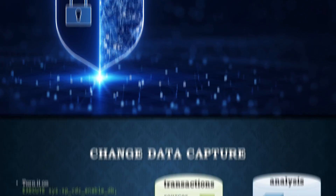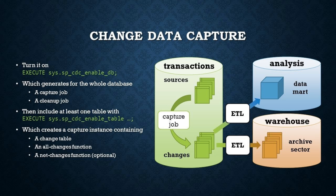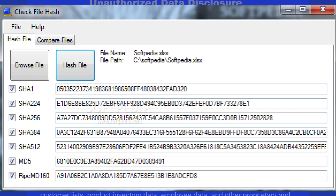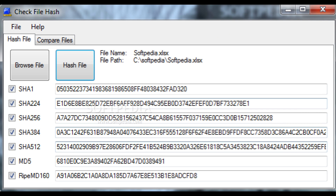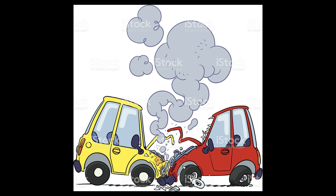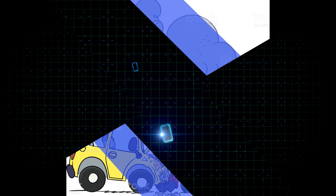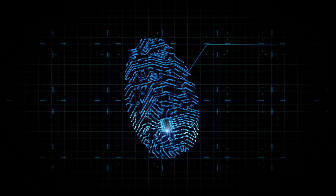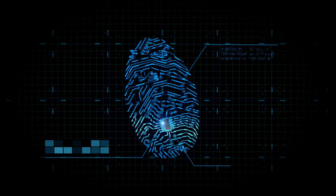Even a minor change in the data set will yield a completely different hash value. As such, any unauthorized data manipulation will be found and identified. Also, in a hash algorithm, every possible data set should yield a different hash. If two different data sets yield the same hash, this is known as a collision, which will render the hash algorithm ineffective — much like fingerprints are supposed to be a unique identifier for people, and even though there are billions of people, no two people have the same fingerprint.